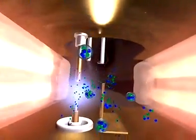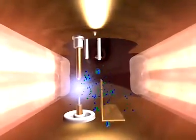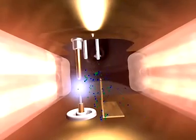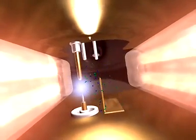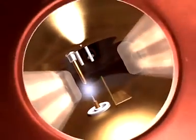The Agilent multimode source features alternating ion polarity switching, so you can acquire positive and negative electrospray and APCI data from a single injection. Whether you are screening libraries of unknown compounds or analyzing complex mixtures,